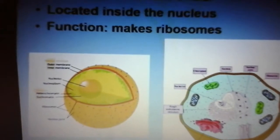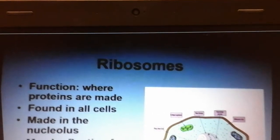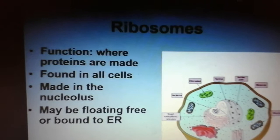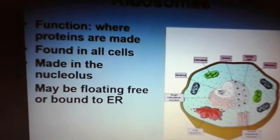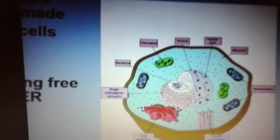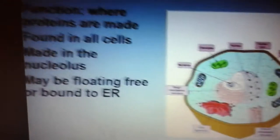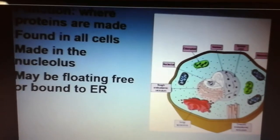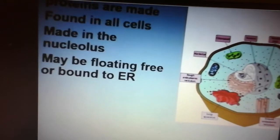Only eukaryotes have a nucleolus because they're the only ones that have a nucleus. Now for ribosomes — the function is where proteins are made. Every cell in nature has ribosomes: prokaryotes have ribosomes, eukaryotes have ribosomes, because what makes each cell different is the proteins it makes. All those little polka dots in the cell drawing are ribosomes. Under special characteristics: some ribosomes just float around and make proteins for that cell to use, while others are attached to a different organelle called the endoplasmic reticulum, which we'll talk about next.